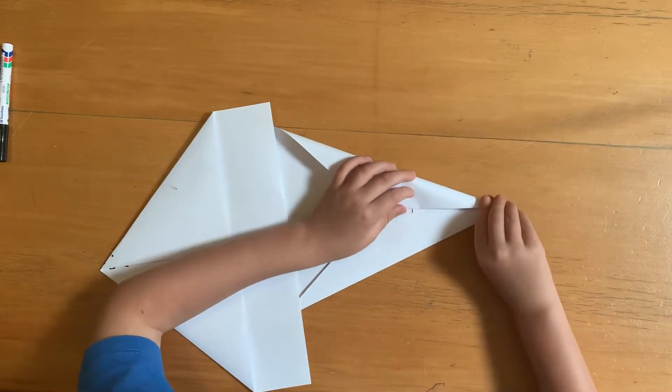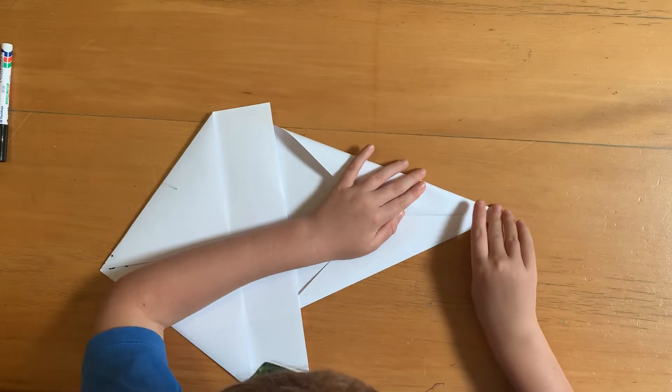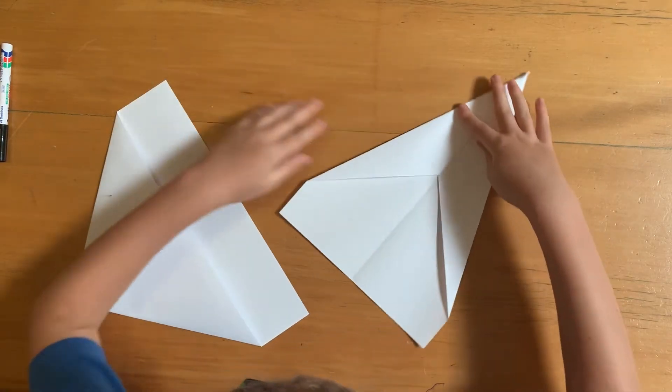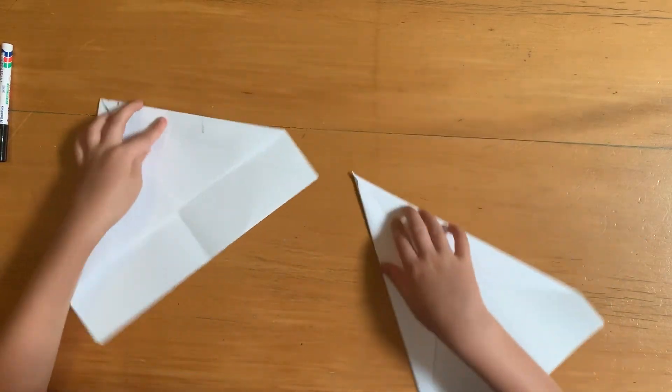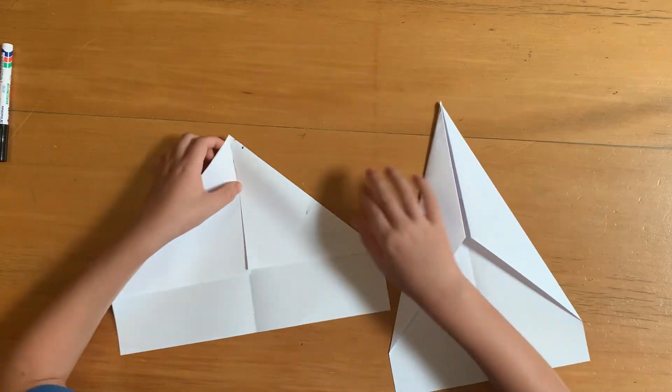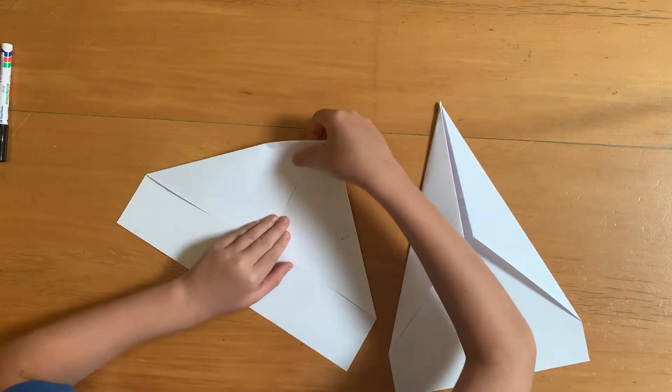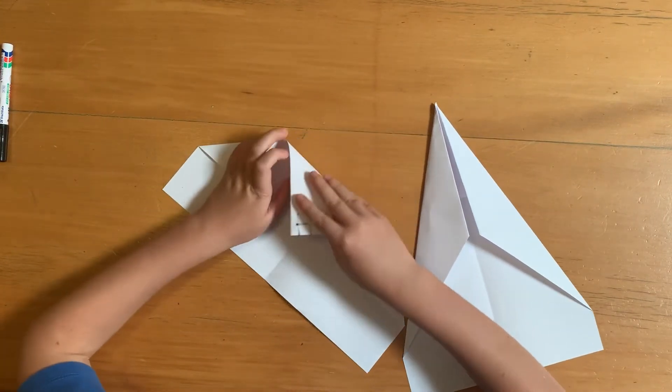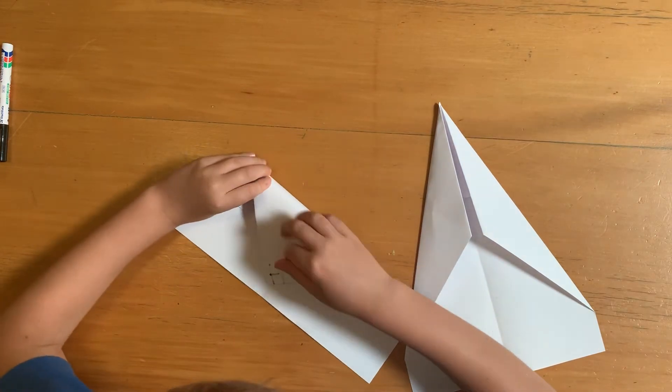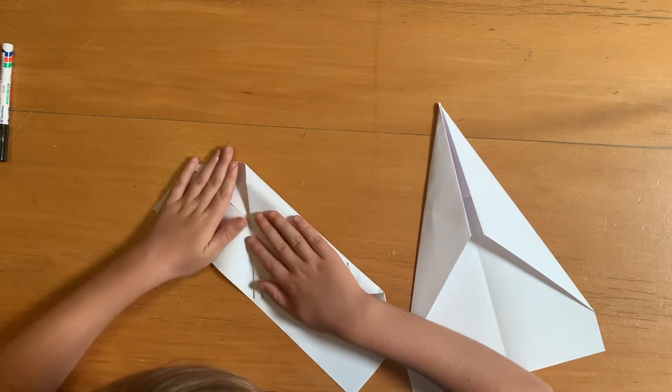We fold it a second time just like this, but we're going to leave that instead of folding it up. Then we get this side and we fold the corner of the top down to the very bottom, so the point is even with the bottom of the page.